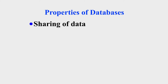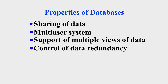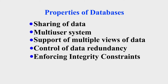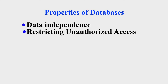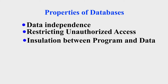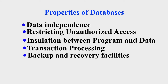So what are the properties of databases? The first one is sharing of data. The second one is the ability to have more than one user — a multi-user system. A database also supports multiple views of data, meaning the same data can be viewed by many users at the same time. Databases also control data redundancy and ensure integrity constraints. There is also data independence, security for authorized and unauthorized access, insulation between program and data, transaction processing, and finally backup and recovery facilities in case of any problem.